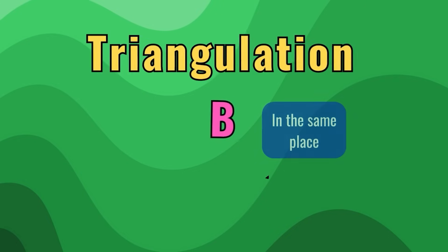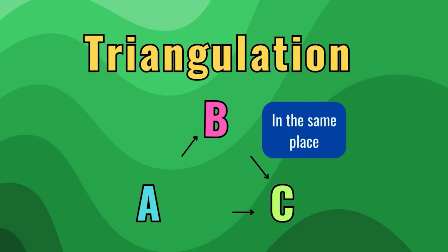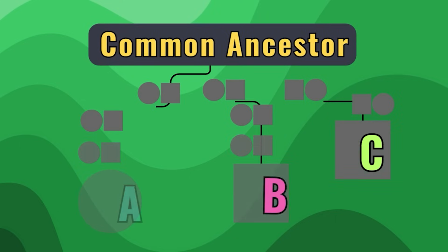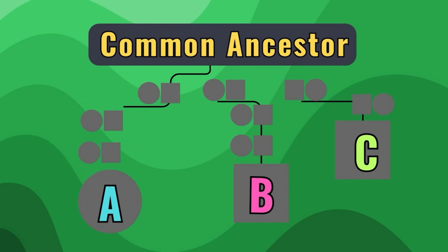That's why there's no triangulation, even if the colors stack up. The bottom line: triangulation only happens when all three people share the same segment on the same chromosome copy, meaning all three must be related through the same line. The triangulation box confirms this behind the scenes. So if you don't see it, don't assume it's just missing — it's doing its job.